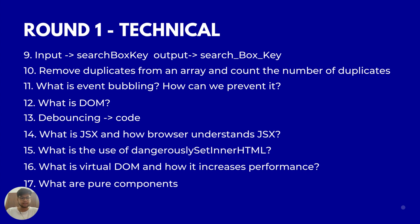The tenth question was: remove duplicates from an array and count the number of duplicates. That was the last coding question in that set. The eleventh question was: what is event bubbling and how can we prevent it?